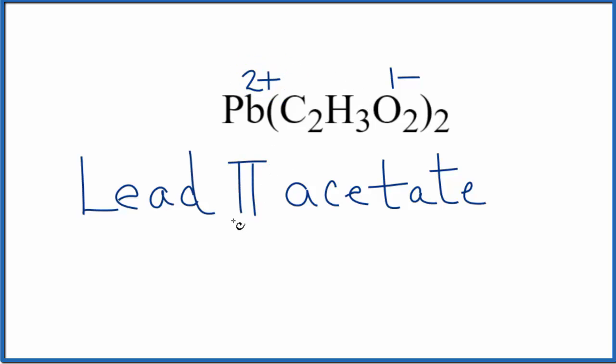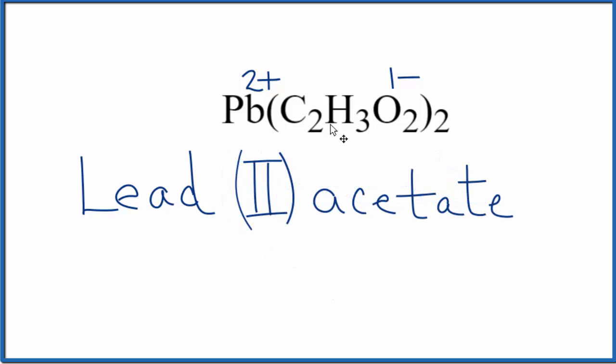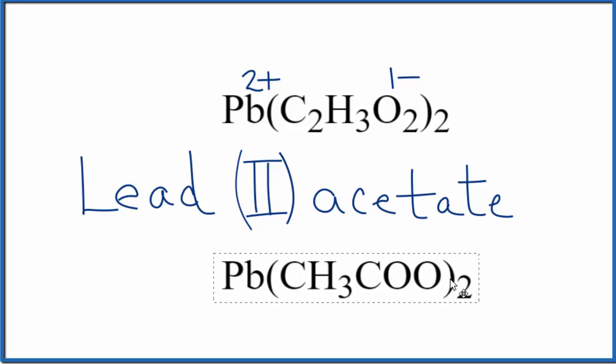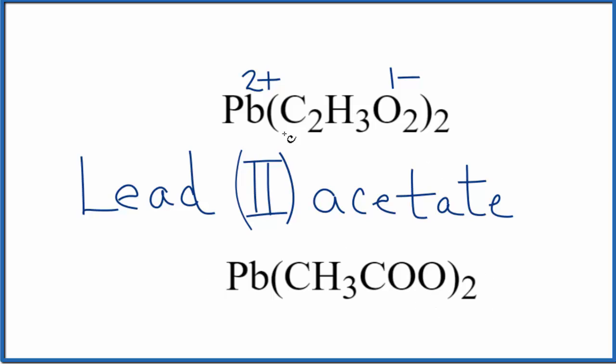To show this two plus, we put a Roman numeral 2 in parentheses. And that makes the name for Pb(C2H3O2)2 lead(II) acetate. And you may also see it written as Pb(CH3COO)2. It's the same thing, we just have the acetate ion written a little bit differently.